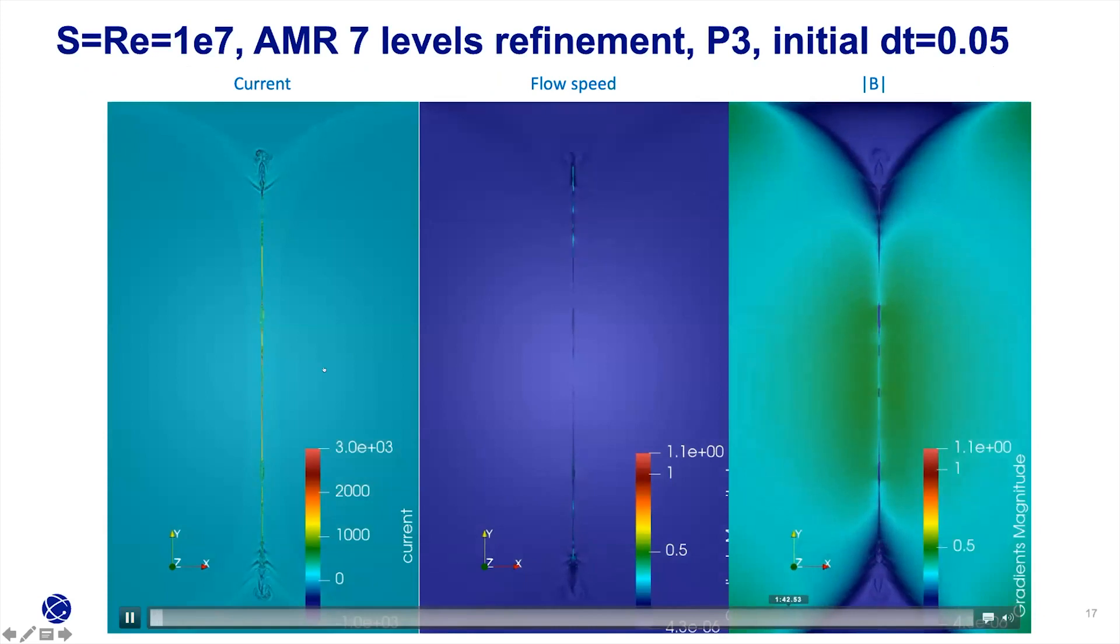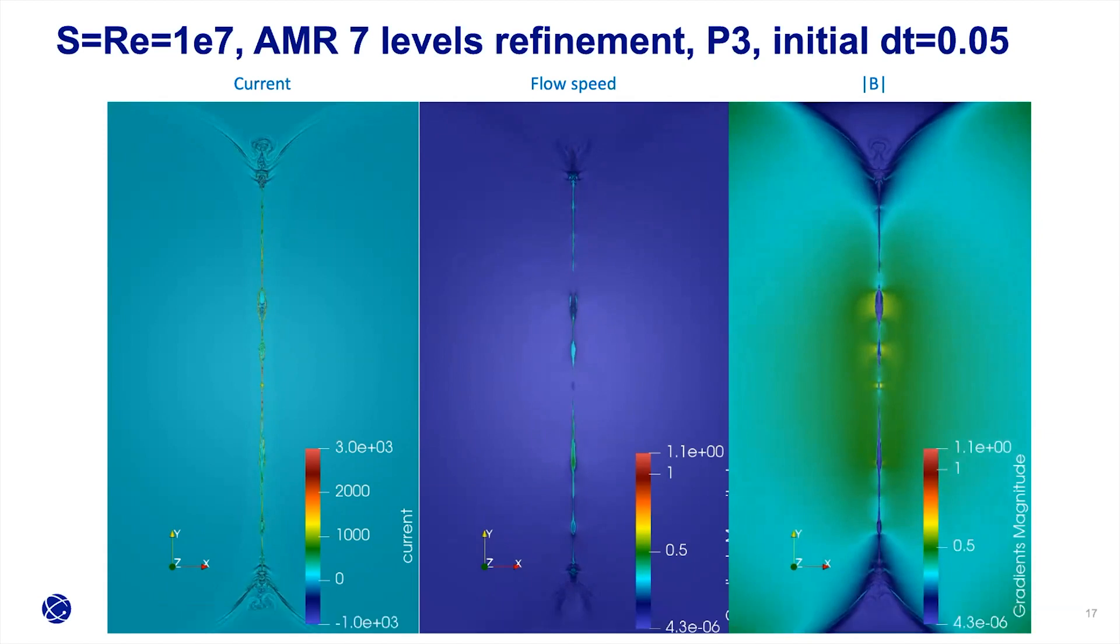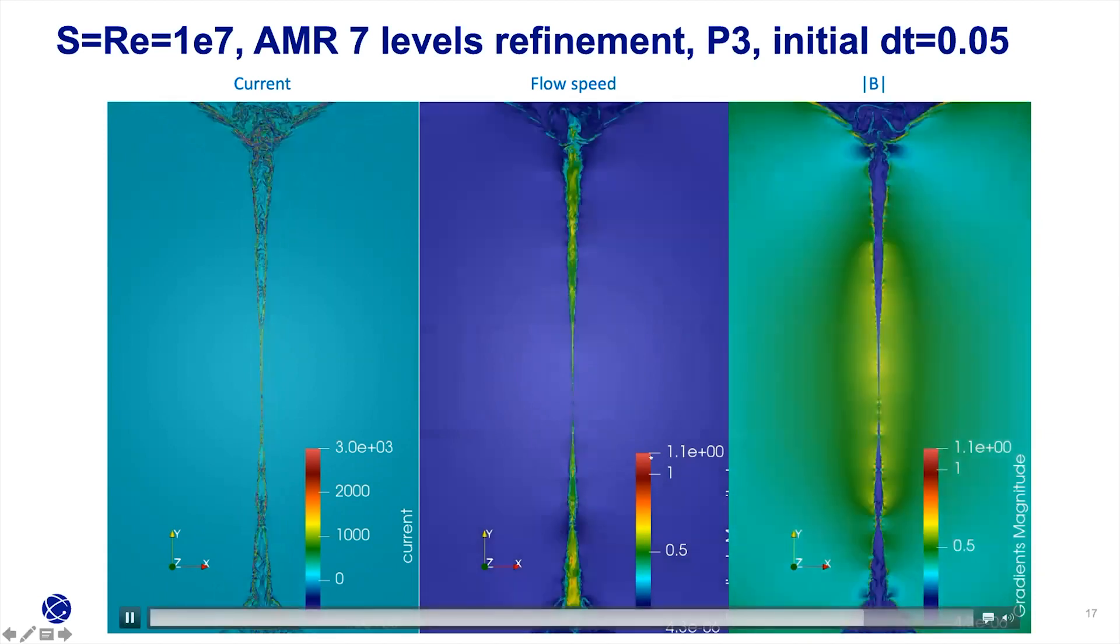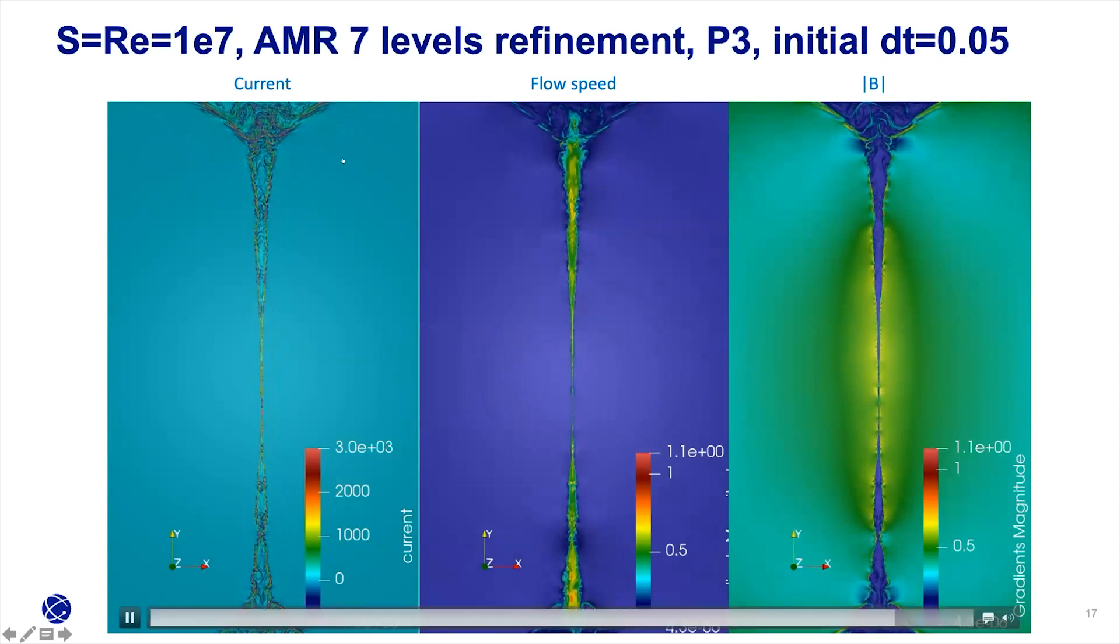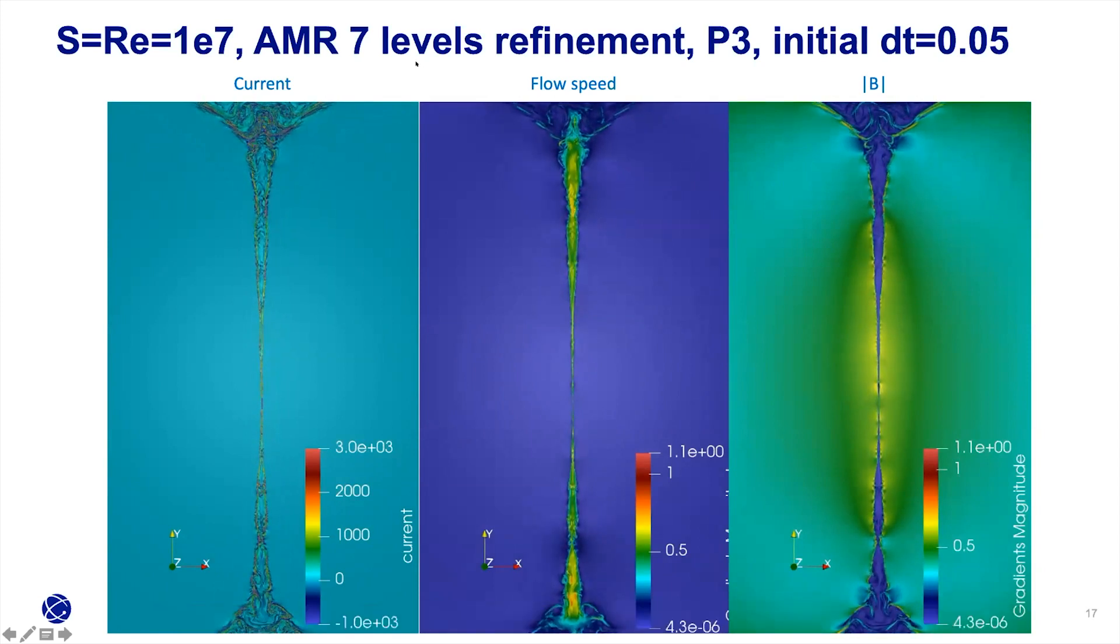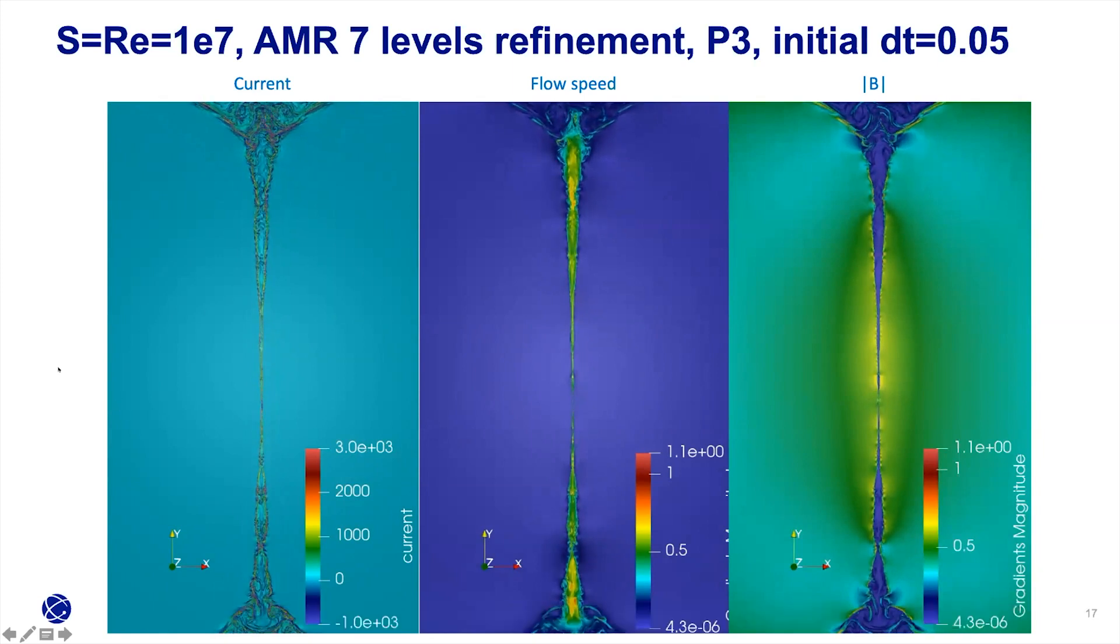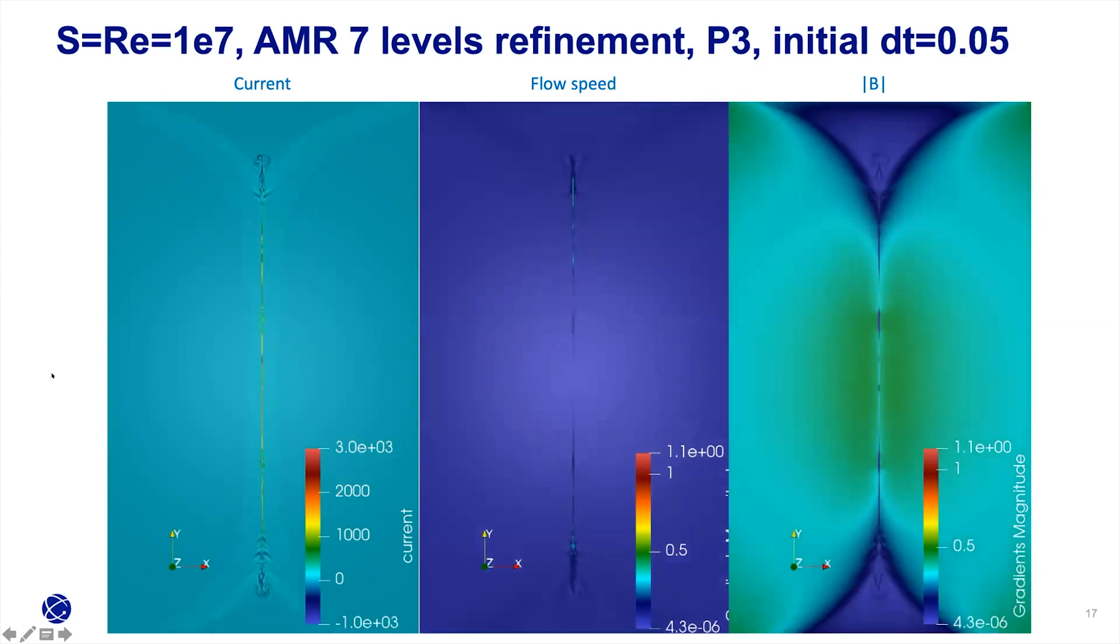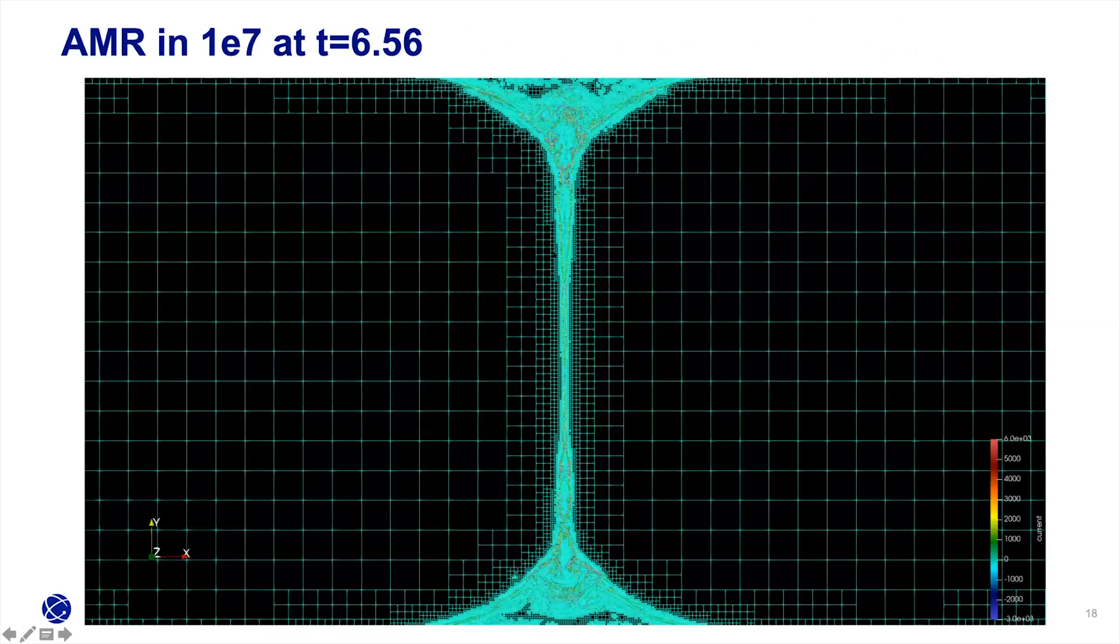For the 10^7 simulation, this case is even more challenging. We're looking at a very tiny region of the entire domain. The current sheet breaks very frequently and forms very complicated plasmoid structures, climbing into each other. In the end, it's quite complicated. We use seven levels of refinement to try to capture those structures dynamically.